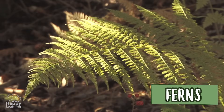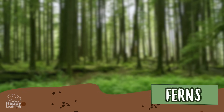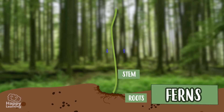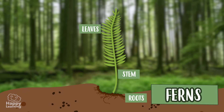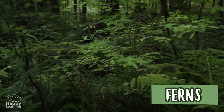Ferns are higher plants and their body is divided into roots, which is where they absorb water from the soil; stem, which is where the water circulates; and leaves that grow upwards from the stem. Ferns also live in humid places.